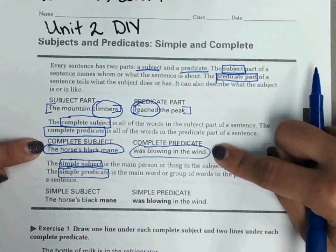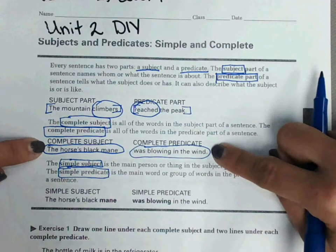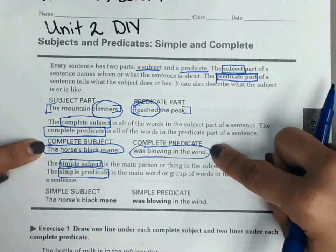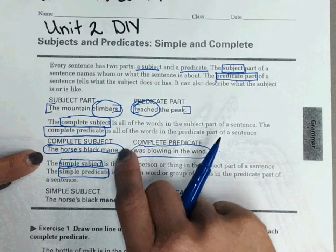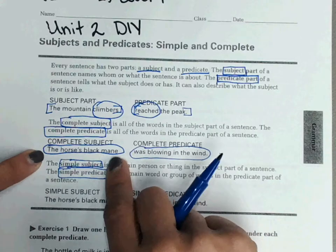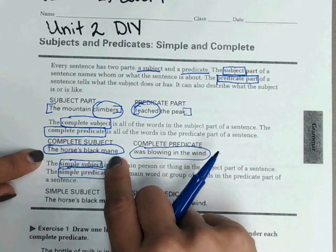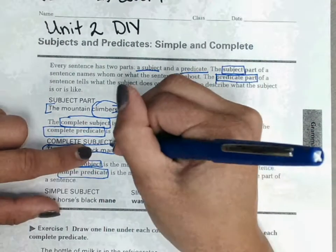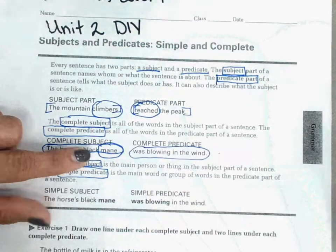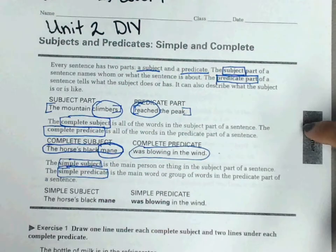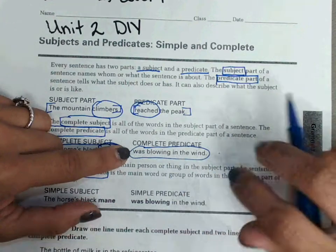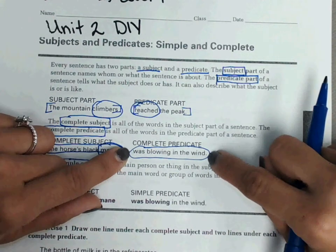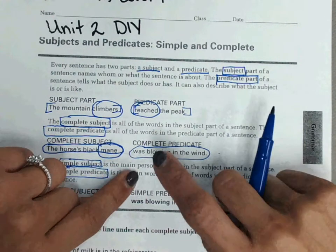In our second example, 'the horse's black mane' is the complete subject, and the simple subject is just 'mane.' The complete predicate is 'was blowing in the wind,' and the simple predicate would be 'was blowing.'